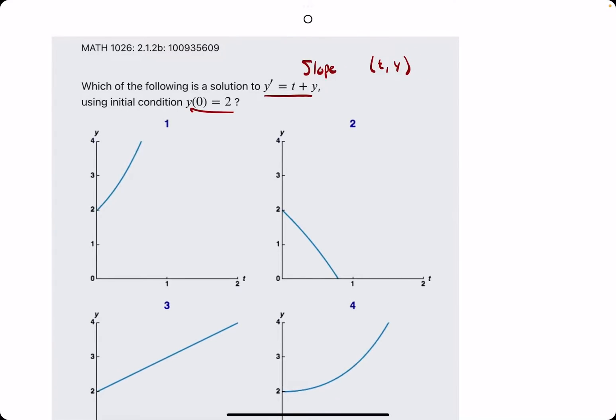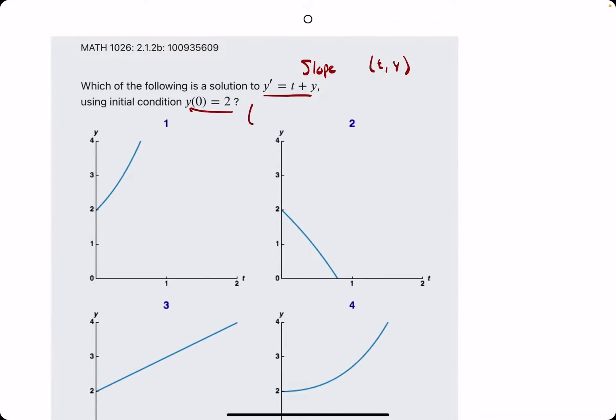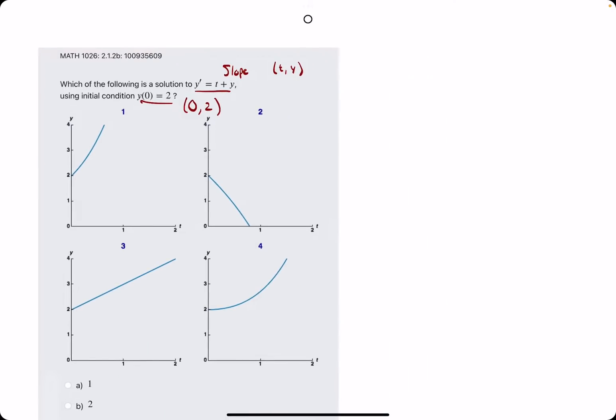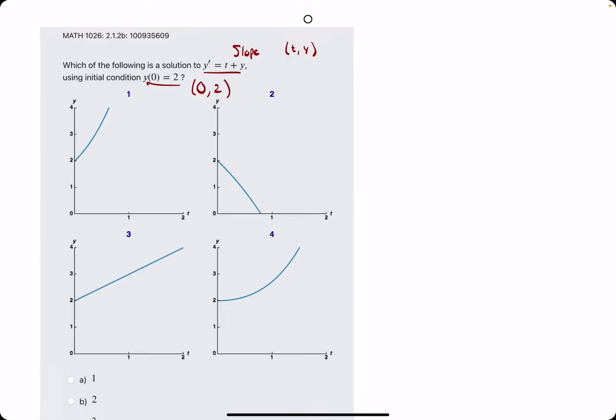They also provide us with the initial condition, (0, 2). So with both of these, we are to find a solution to the differential equation starting with that initial condition. We just want to make sure first that the correct answer starts at (0, 2). But I want to say all of them will always start at the correct initial condition, so it doesn't really help us.